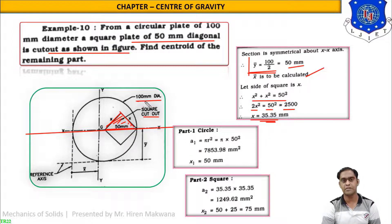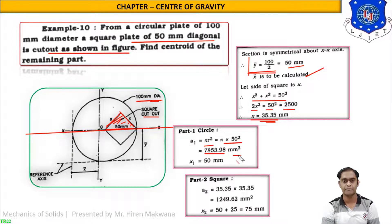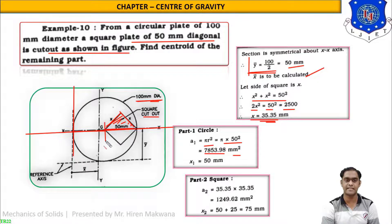For part 1, the circle: diameter = 100 mm, radius = 50 mm, so A1 = πr² = π × 50² = 7853.98 mm². Drawing the y-axis at the left edge, the CG of the circle is at the radius distance from that axis, so x1 = 50 mm.